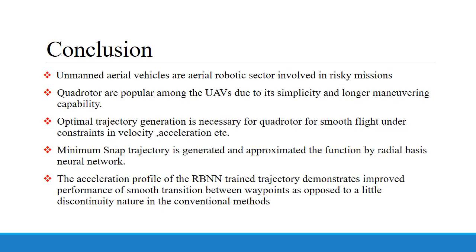In conclusion: unmanned aerial vehicles in the aerial robotics sector are used for risky missions where humans would be endangered. Quadrotors, due to their simplicity and high maneuverability, are the best choice. Optimal trajectory generation is necessary for smooth flight under constraints of constant velocity, acceleration, and control effort. Minimum snap trajectory is best suited for quadrotors according to their dynamics. Training with a radial basis neural network provides more advantages in performance, smooth acceleration transitions, prediction of future behavior, and robustness to missing data.